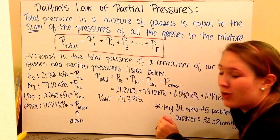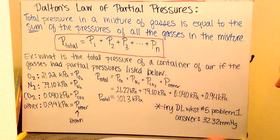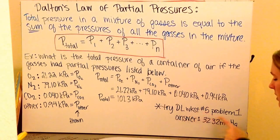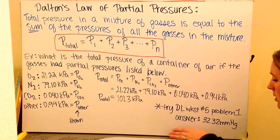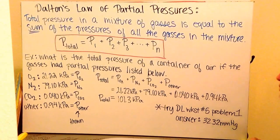Notice that at standard temperature and pressure, this is one of your standard pressures. At this time, go ahead and try your Dalton's Law Worksheet number five, problem number one. When you're done, you should get an answer of 32.32 millimeters of mercury.